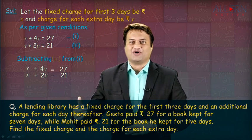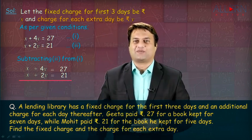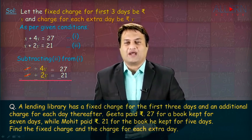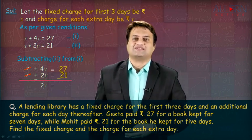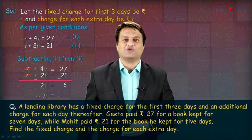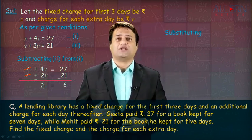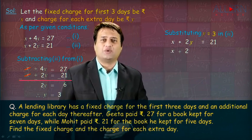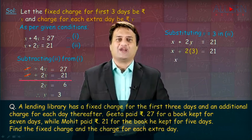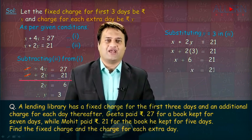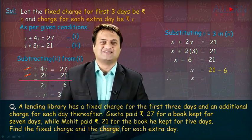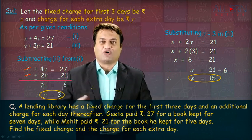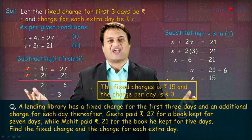Subtracting equation 2 from equation 1 — this is the first equation, this is the second equation. Let us subtract and change the signs. We get 4Y minus 2Y is 2Y, and 27 minus 21 is 6. So 2Y equals 6, which gives Y equals 3. Substituting Y equals 3 into the second equation: X plus 2 into 3 equals 21, so X plus 6 equals 21, giving X equals 15. So the fixed charge is Rs. 15 and the charge for each extra day is Rs. 3. As simple as that.